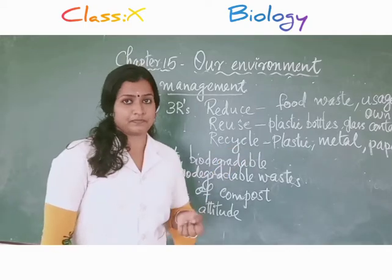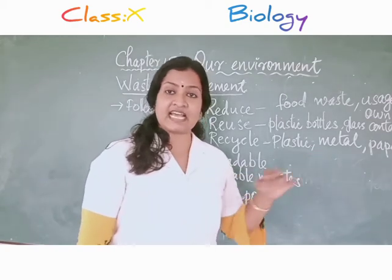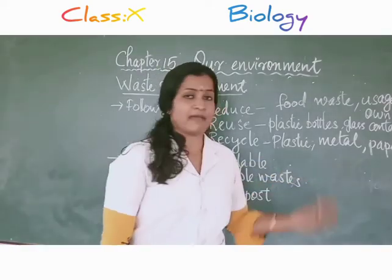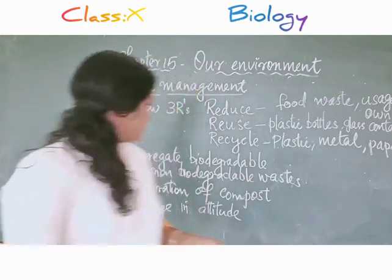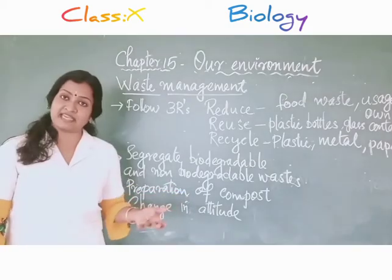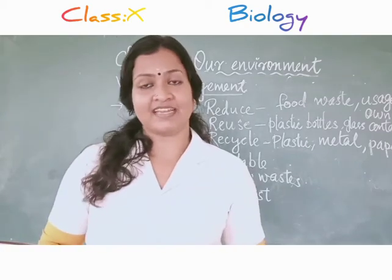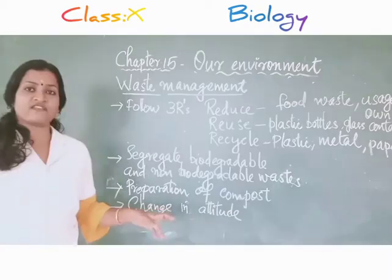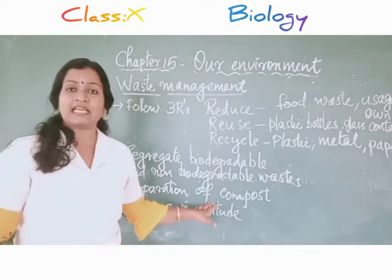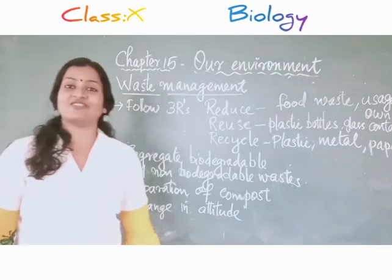The next one is recycle. Recycle means the waste materials will be recycled to form any other useful products. Examples are plastic, metal, and paper. Next, the first thing we have to do is segregate or separate biodegradable and non-biodegradable waste — we can keep two dustbins in our house. Then, preparation of compost: biodegradable waste like kitchen waste, vegetable waste, and all organic waste can be dumped and composted. And the most important thing is we have to change our attitude.